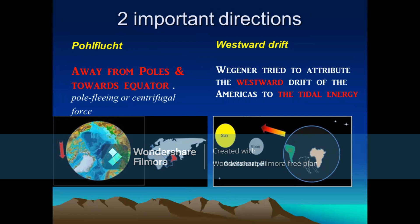One direction was away from the poles, which Wegener termed as 'Polflucht' — a German word meaning flight from the poles. This means movement away from the poles and towards the equator. So one of the directions of drift was away from the poles and towards the equator, as can be seen in the movement of the continents.